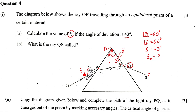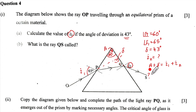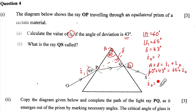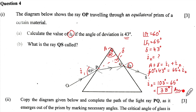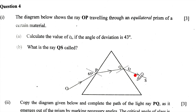Using the formula A + delta = I1 + I2, we substitute: 60 + 43 = 65 + I2, giving I2 = 103 − 65 = 38 degrees. That is our answer. Ray Q is called the emergent ray.